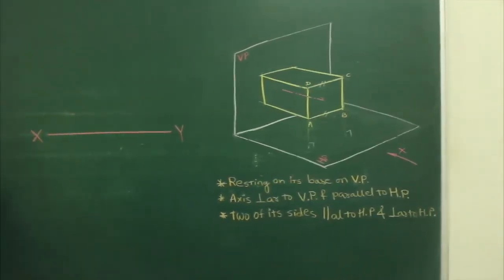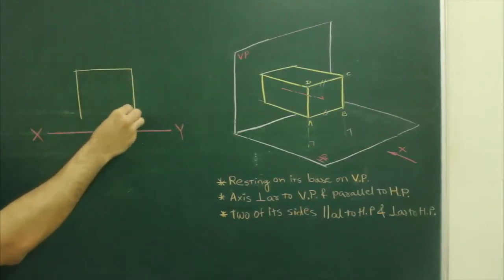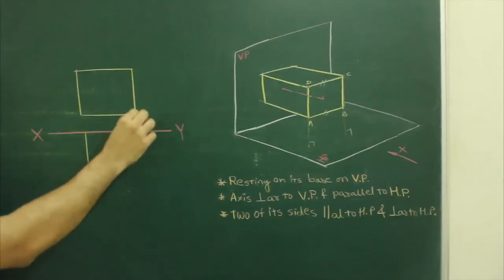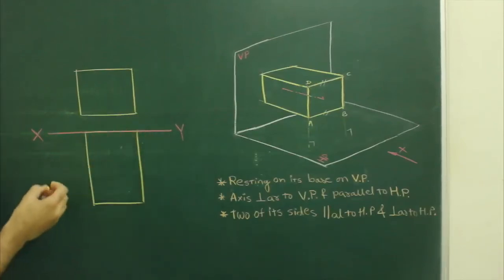First we draw square of side 30. You can leave any gap and top view you can draw a rectangle. So here...